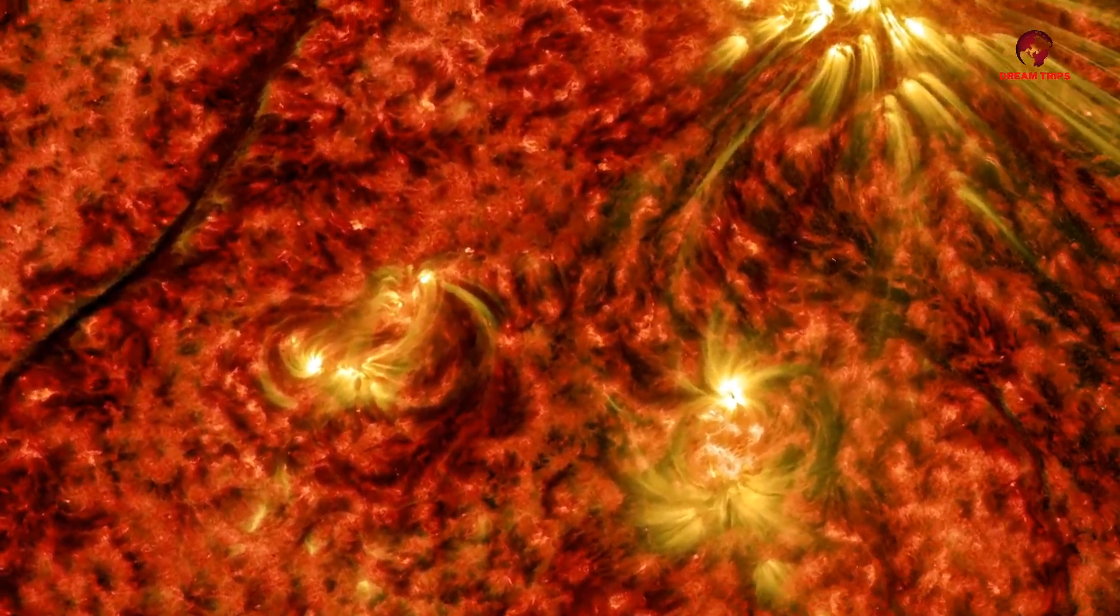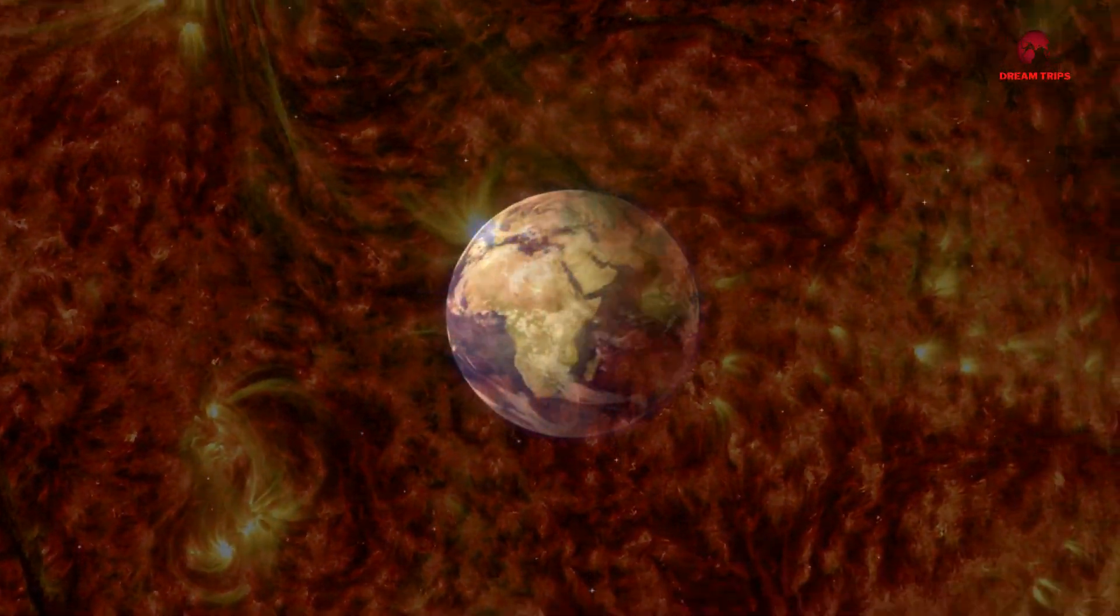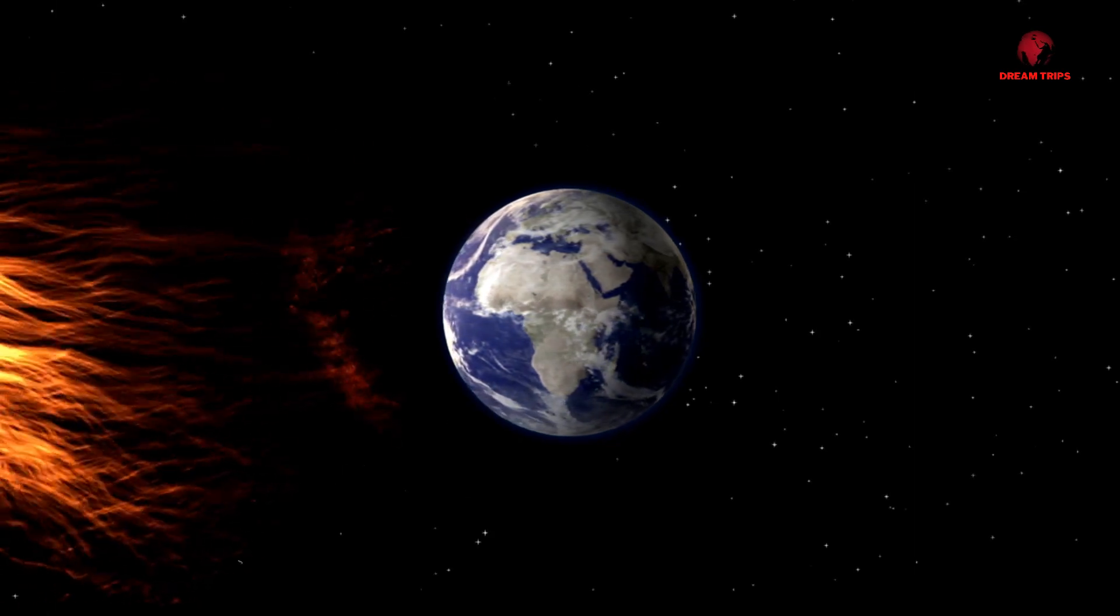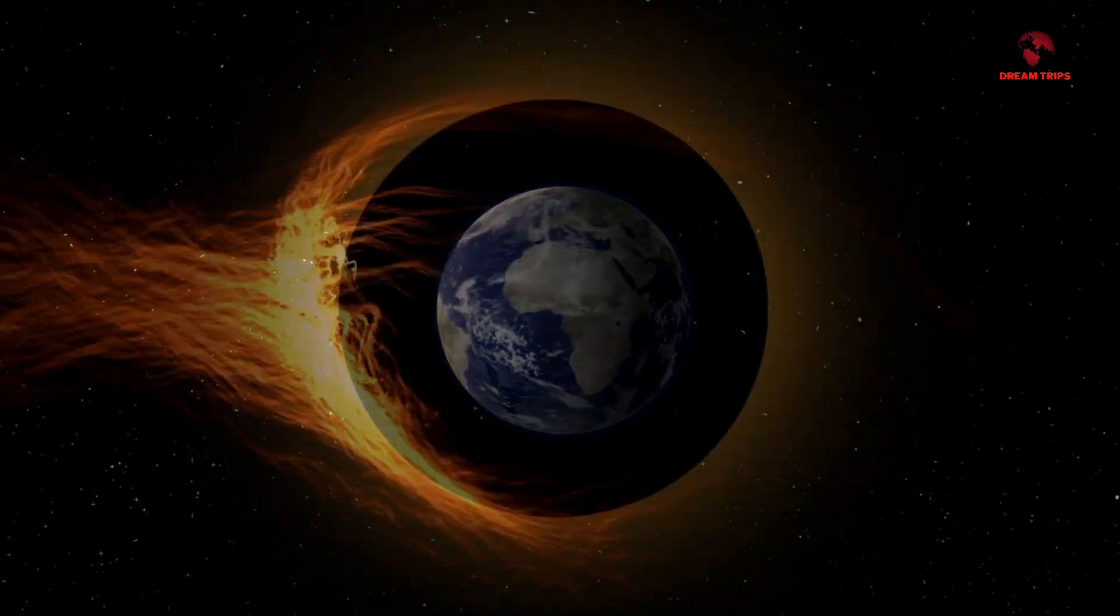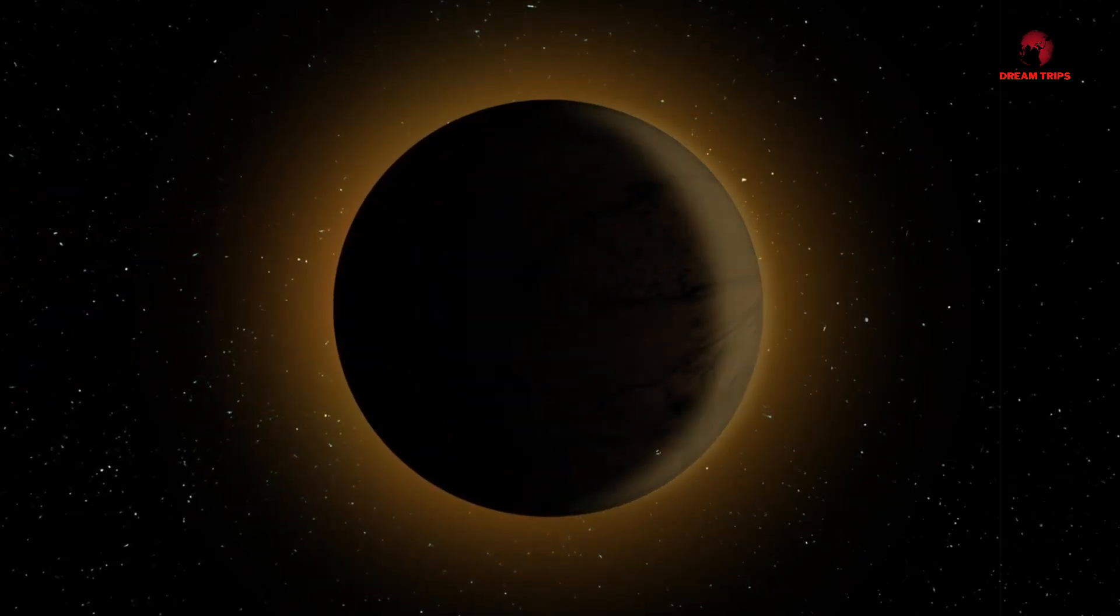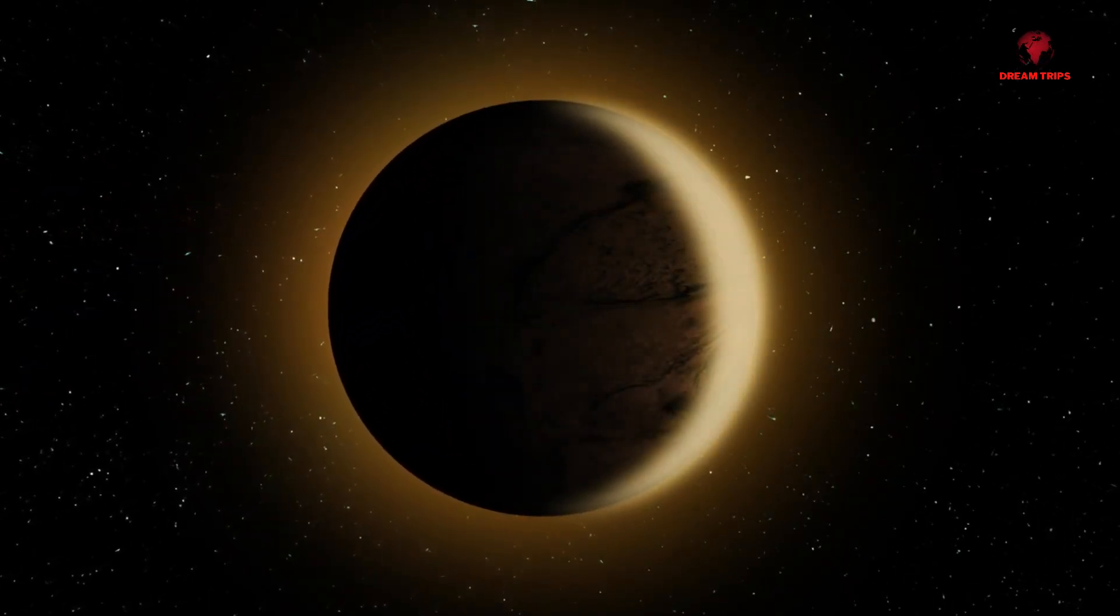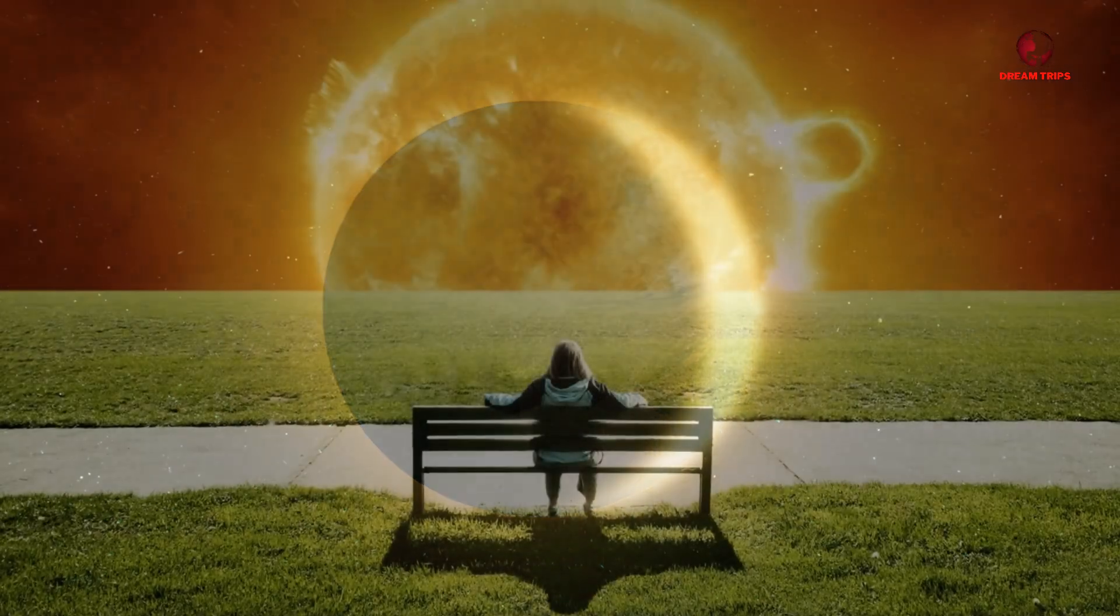Scientists have been closely monitoring solar activity cycles. The sun goes through approximately 11-year cycles of solar activity, known as solar cycles, marked by varying numbers of sunspots. We are currently in solar cycle 25, which began in December 2019.